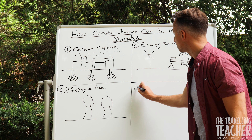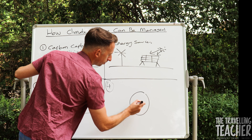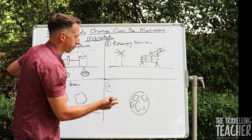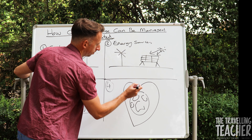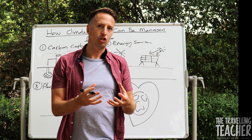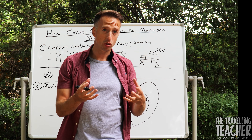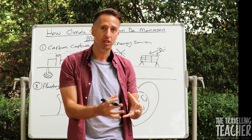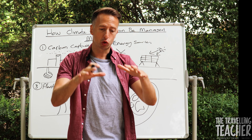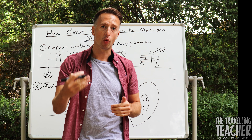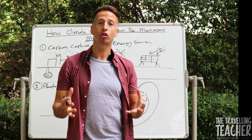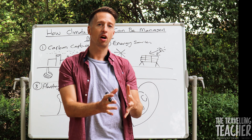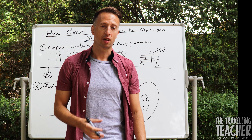And the fourth one is when the world comes together — this is all about international agreements, where governments from around the world, especially those producing the most carbon dioxide, methane, and nitrous oxide, come together and set targets to reduce their carbon levels by a set given point. All of those countries have a shared responsibility to stand by those targets and achieve them together, so everyone on planet Earth can feel the benefits.